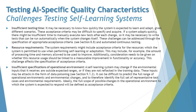Another challenge is insufficient specification of the operational environment. A self-learning system may change if the environmental inputs it receives are outside the expected range or not reflected in the training data. These inputs may arrive in the form of data poisoning. It can be difficult to predict the full range of operational environment and environmental changes, and therefore to identify the full set of representative test cases and environmental requirements. It is crucial to understand what is expected from the operational environment of the AI-based self-learning system.